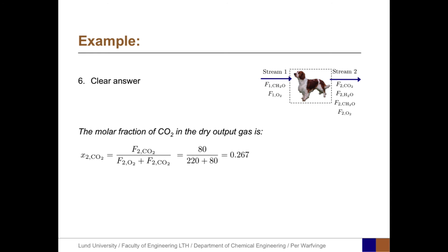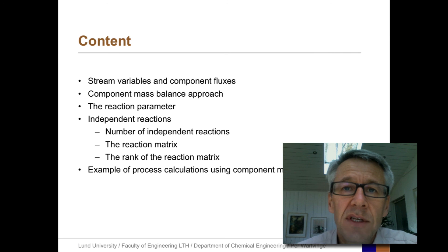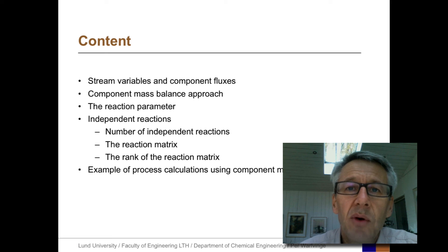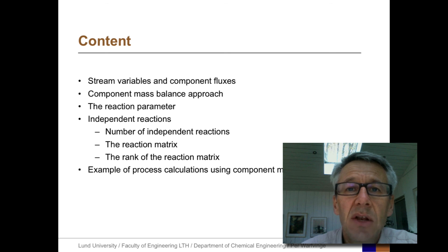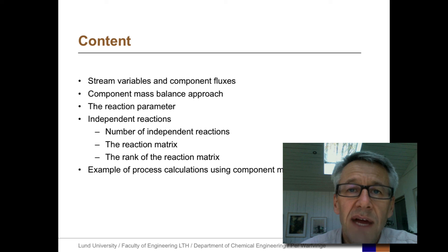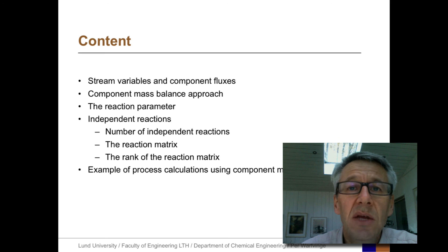The clear answer is that the molar fraction of CO2 in the dry output gas is F2CO2 divided by the sum of F2O2 and F2CO2. In summary, this screencast covered stream variables and component fluxes, the component mass balance approach, the reaction parameter used to quantify the production term in the mass balance (input plus production equals output), independent reactions including the reaction matrix and its rank, and a comprehensive example applying component mass balances in process calculations.